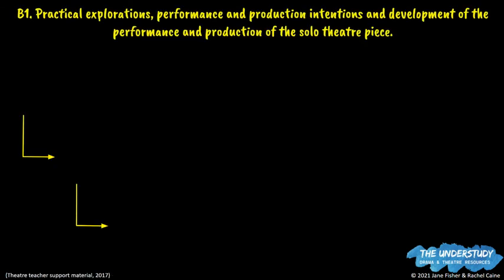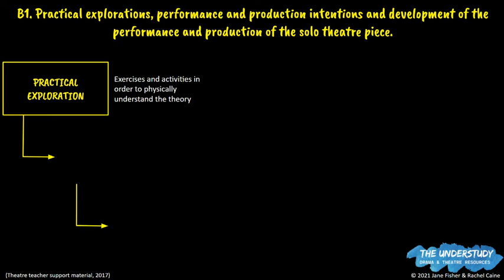Criterion B is where you record your practical explorations, your performance and production intentions. What do you intend? What are your performance intentions? What is it that you want to showcase and what do you want the audience to gain? This is also where you record the development of your performance. Practical exploration means exercises or activities that you participated in or used to physically understand the theory — similar to what you may have done in your research presentation.